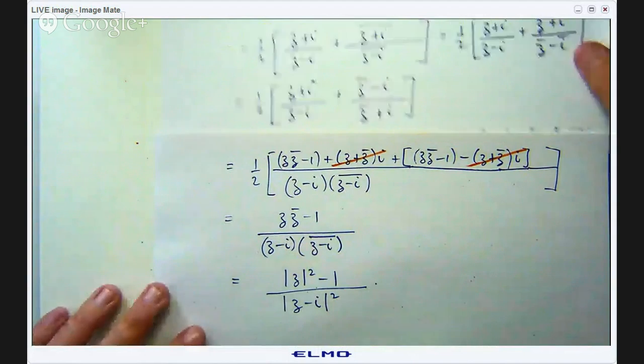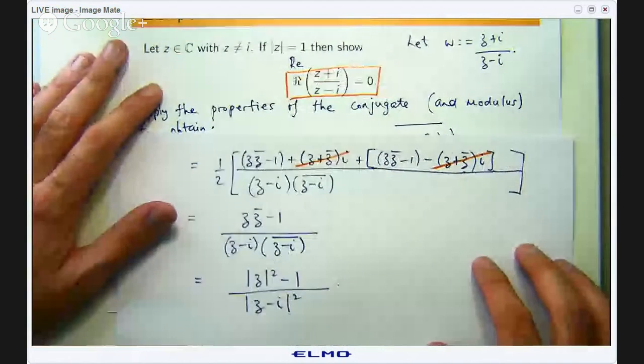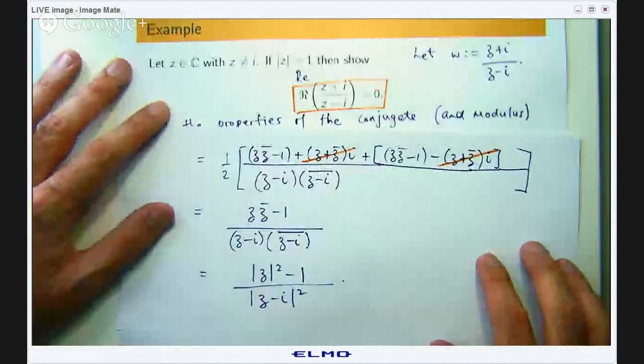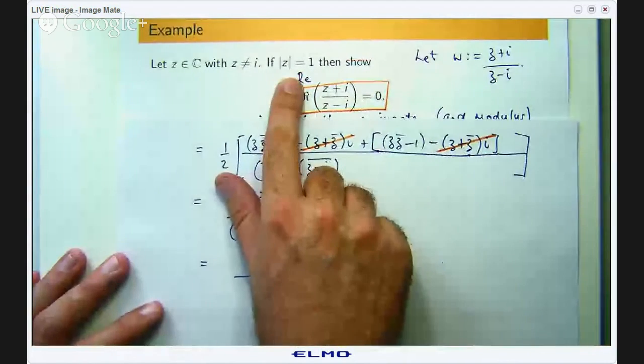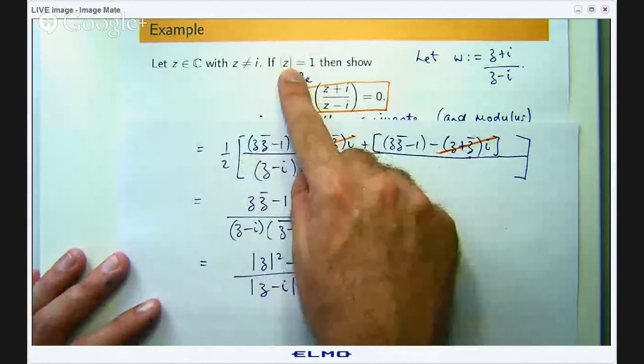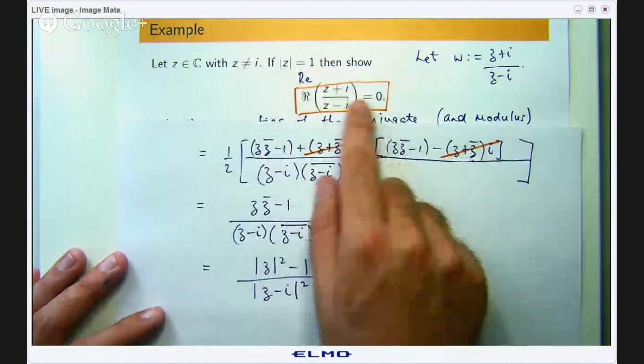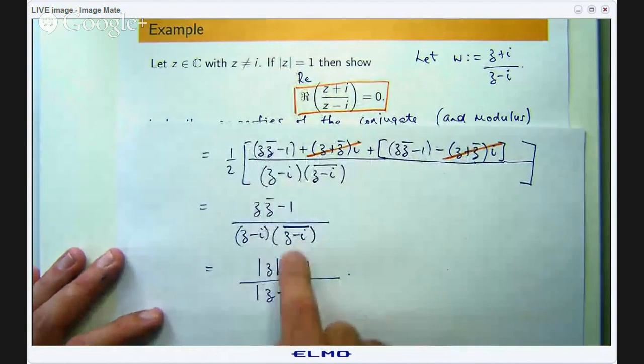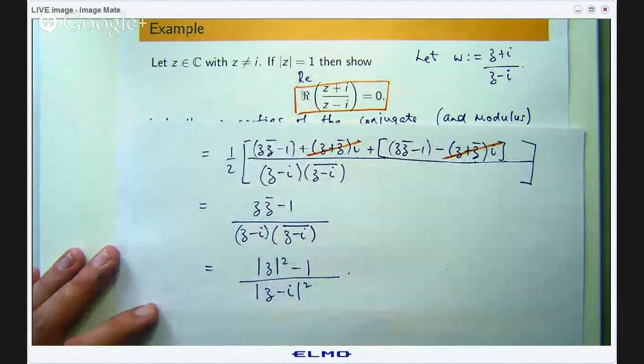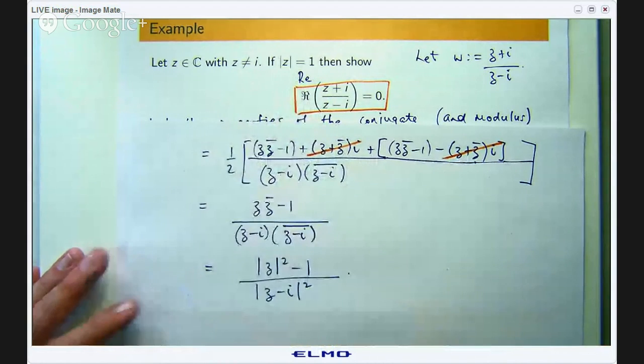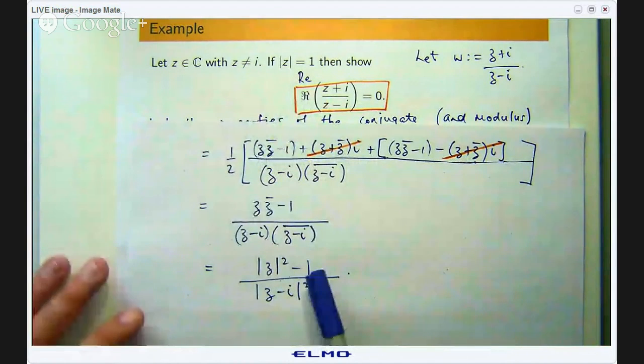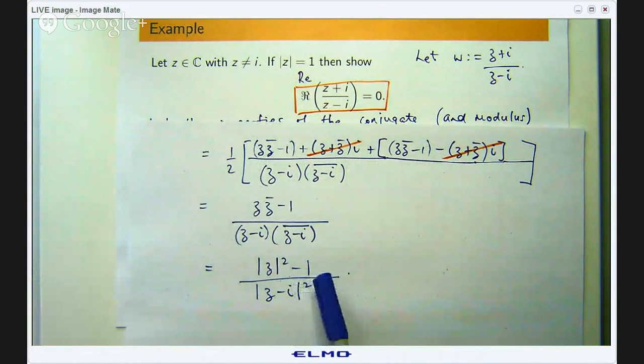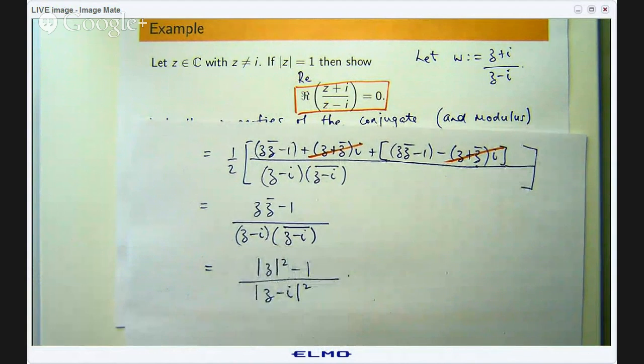We spent a lot of time using the properties of the conjugate and the modulus there. Let us go back to what our assumptions were. We are told that if the modulus of z is 1 then show this thing is 0. Well we have got this here and if the modulus of z is 1 then the square of the modulus is also 1. Right so this denominator has got to be 0.